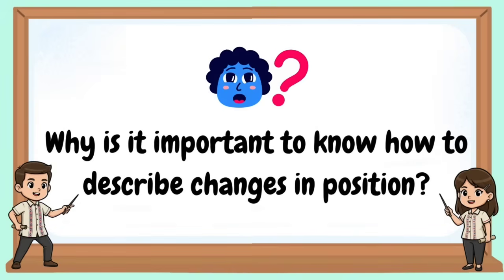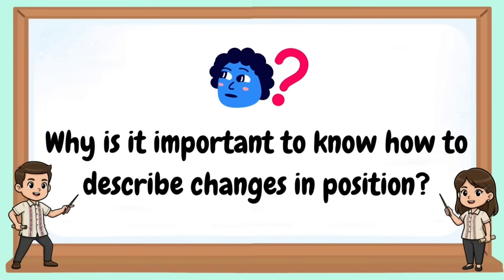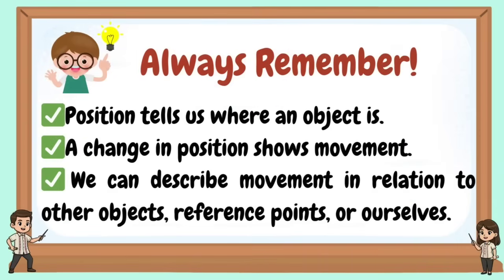Why is it important to know how to describe changes in position? Always remember: position tells us where an object is. A change in position shows movement. We can describe movement in relation to other objects, reference points, or ourselves.